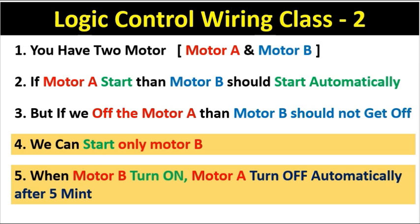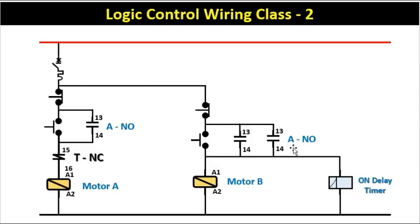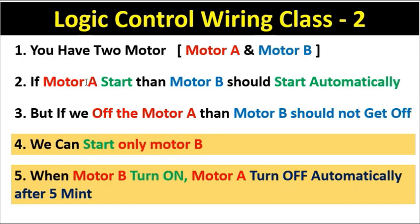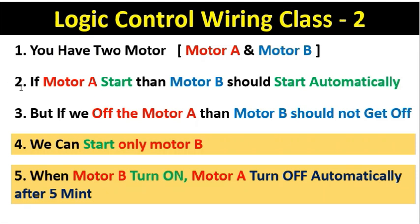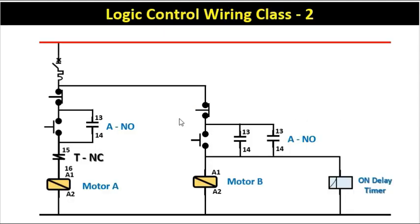So all five logics have been used in this circuit. We have two motors, each with a different starter. If motor A starts, motor B starts automatically — for this, we used the NO contact of motor A's contactor. When motor A turns on, this contact becomes NC, power supply flows, and motor B turns on. Logic 2 is completed. In logic 3, if motor A turns off, motor B should not turn off — and since power supply still flows from the holding circuit, motor B remains on.